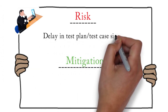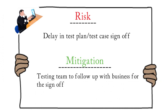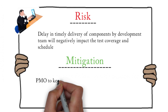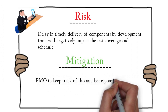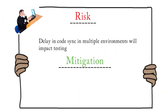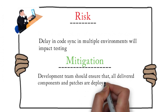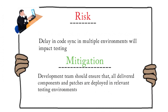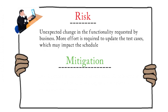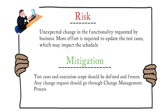For the risk of delay in test plan or test case sign-off, the mitigation plan can be for the testing team to follow up with the business to get the sign-off. For the risk of delay in delivery of components or functionalities by the development team, the mitigation plan can be that the PMO team should ensure the development team is delivering items on time. For the risk of code not being in sync in multiple test environments, the development team should always ensure all delivered components are deployed in relevant testing environments. Test cases and execution scope should be defined and frozen, and any change request should go through the change management process — this should be the mitigation plan for the unexpected change in functionality risk.